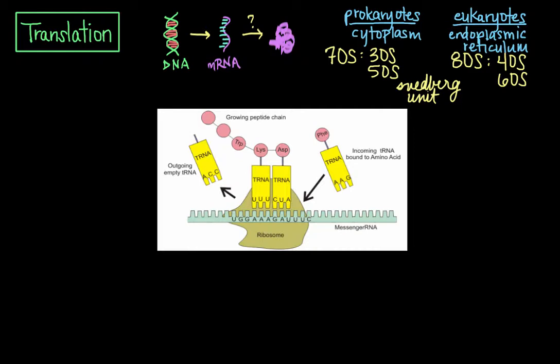Now, translation occurs in three distinct steps, the first of which is initiation. Initiation of translation involves the assembly of the components of the entire translation system, which are the small and large ribosomal subunits. So here is the small subunit.